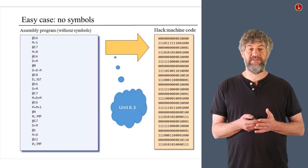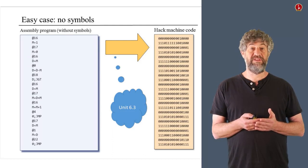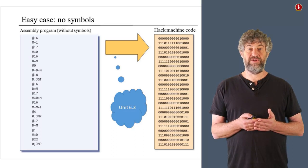So in the easy case, you get an assembly language program without symbols, like we see here on the left hand side. And you're supposed to translate it to the right.